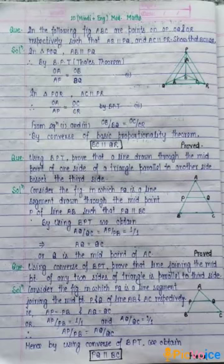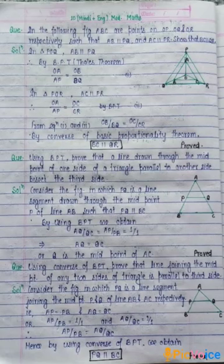In the following figure, A, B, C are points on OP, OQ and OR respectively, such that AB parallel to PQ and AC parallel to PR.